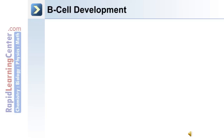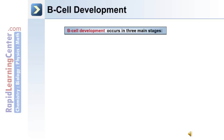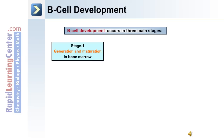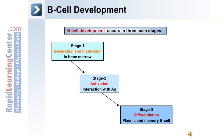This flow chart depicts B cell development in the body. It occurs in three main stages. Stage one is the generation and maturation in the bone marrow. Stage two is activation, which involves the interaction with antigen. And stage three is differentiation into a plasma or memory B cell.